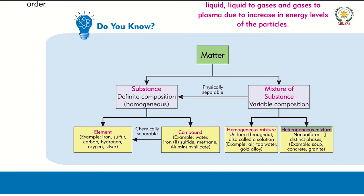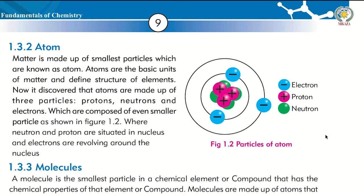Matter is anything that occupies space and has a mass. Substances are in pure form. An element is the purest form of a substance — made up of only one type of atom. A compound is made up of two different types of atoms. We also have atom: the smallest particle of matter, with three subatomic particles — electrons (negative charge), protons (positive charge), and neutrons (neutral charge). Protons and neutrons are in the nucleus.